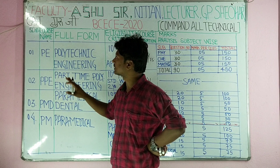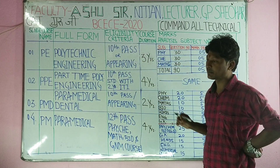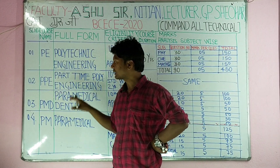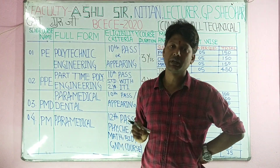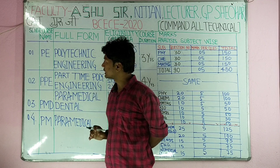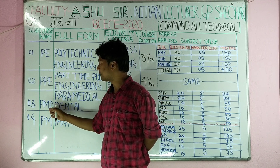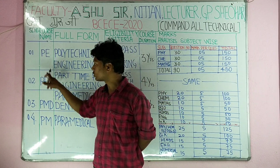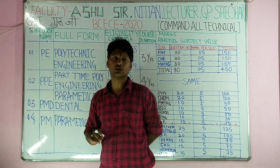The BCECE board offers 4 courses. The first course is PE, second is PPE, third is PMD, and the fourth course is PMC. These two courses — PE and PPE — are for engineering, and these two courses — PMD and PMC — are for medical.